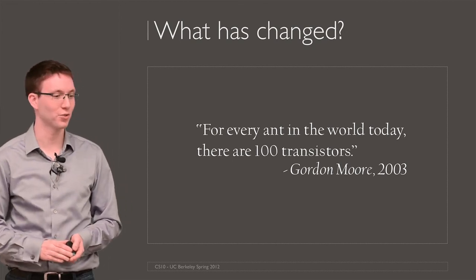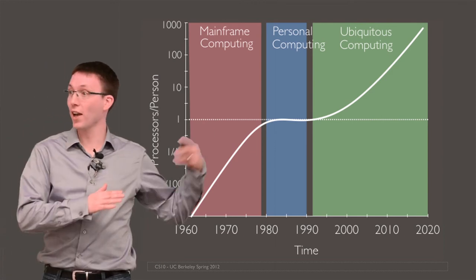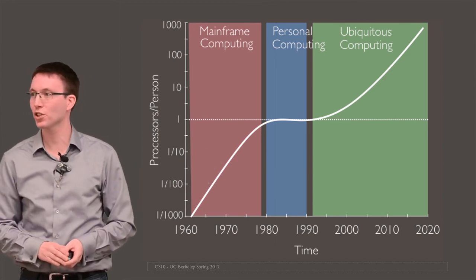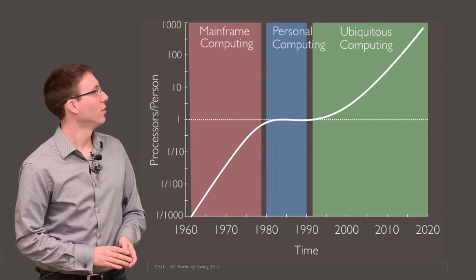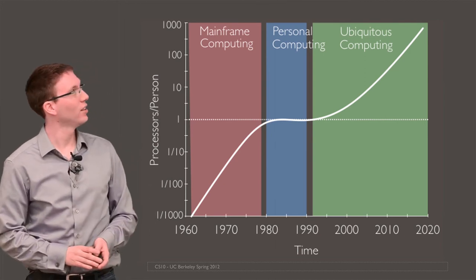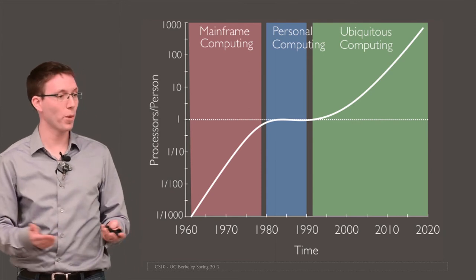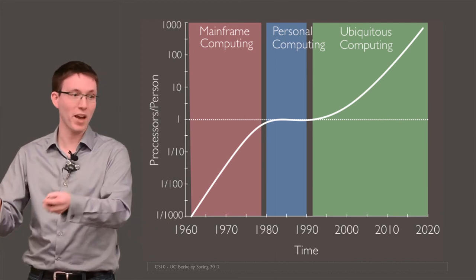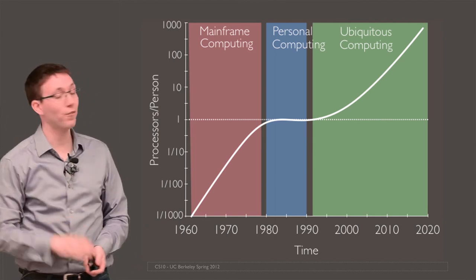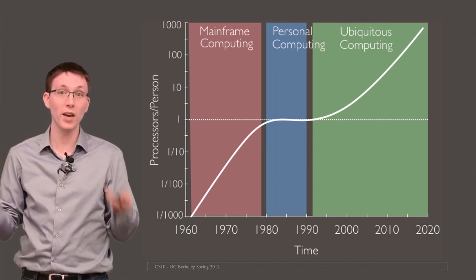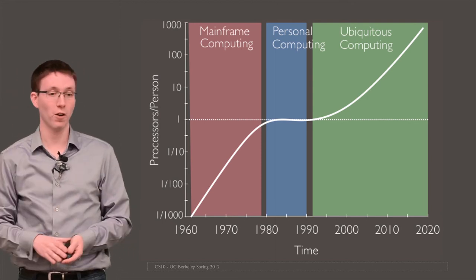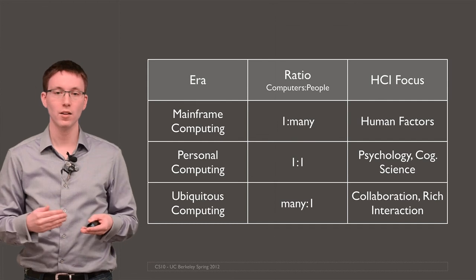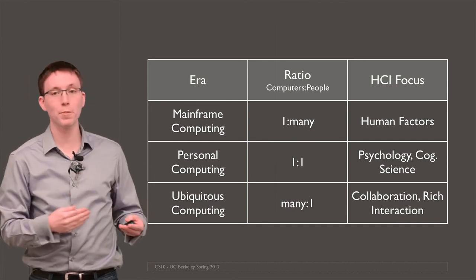And you could graph this. So, these aren't accurate numbers. This is just my rough back of the envelope calculation. Back in the 1960s, when the mouse and the light pen were invented, we had many people per processor. And then, in the 80s and 90s, when personal computing came along, we had about one processor per person sitting in that beige box on your desk. And now, we've really taken off into this age of what has been called ubiquitous computing, where we have hundreds, thousands, millions of processors per person at our disposal.